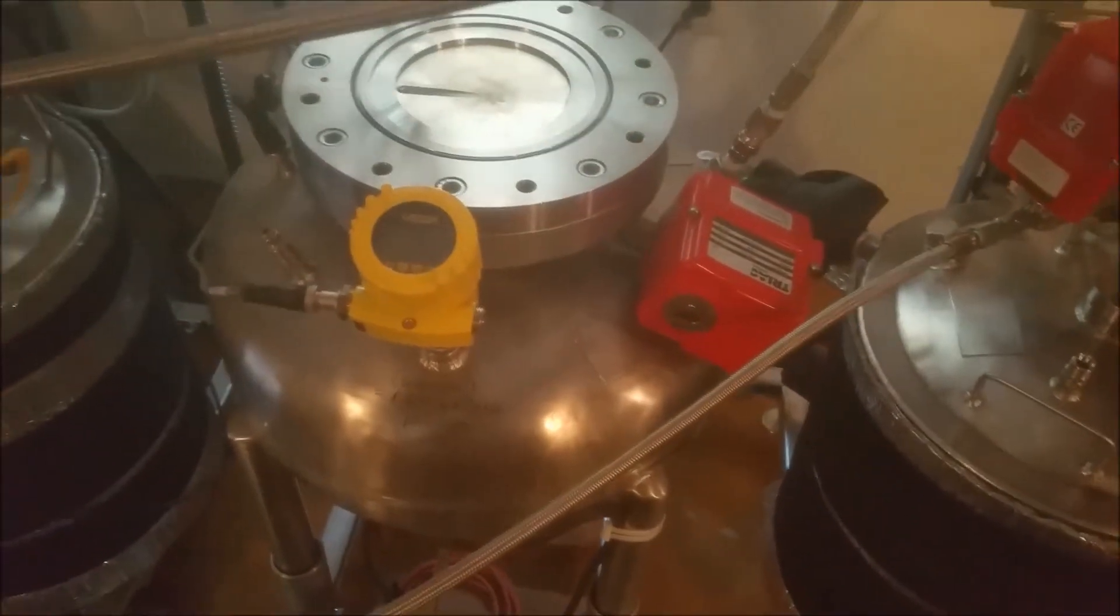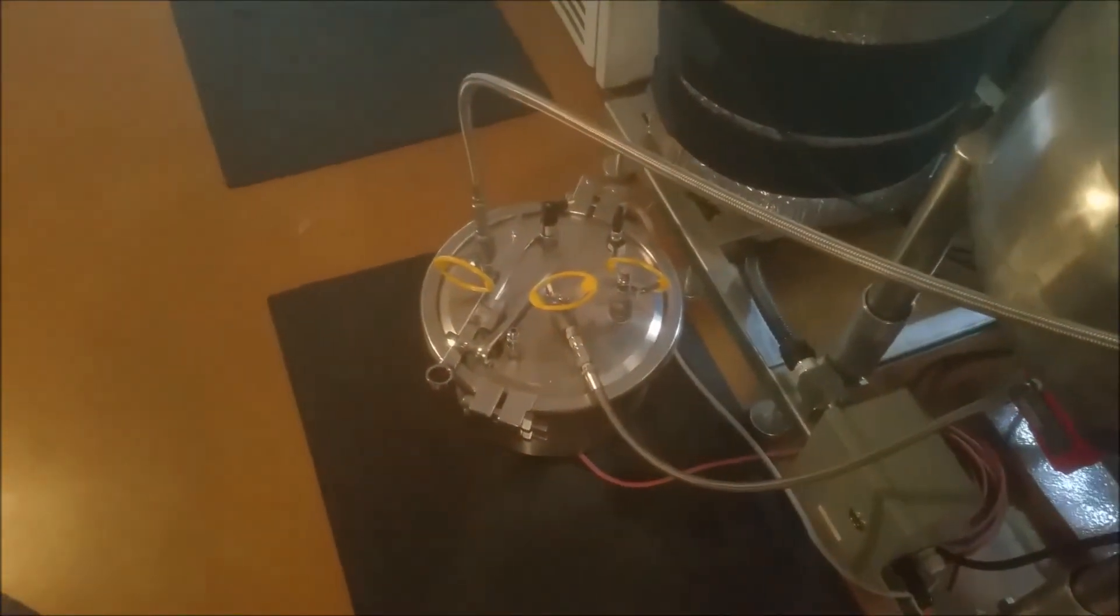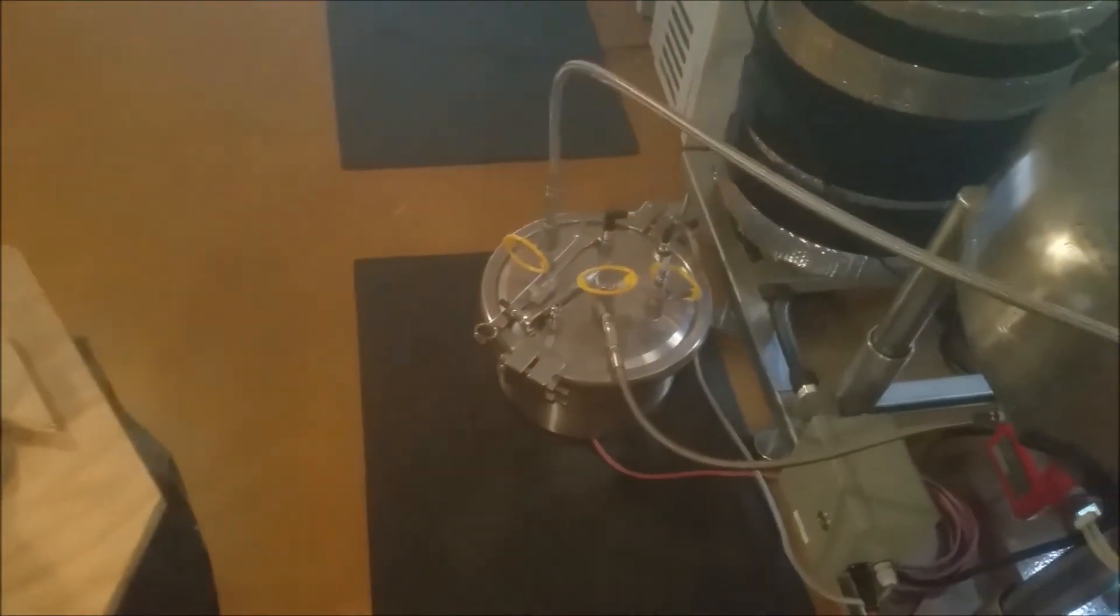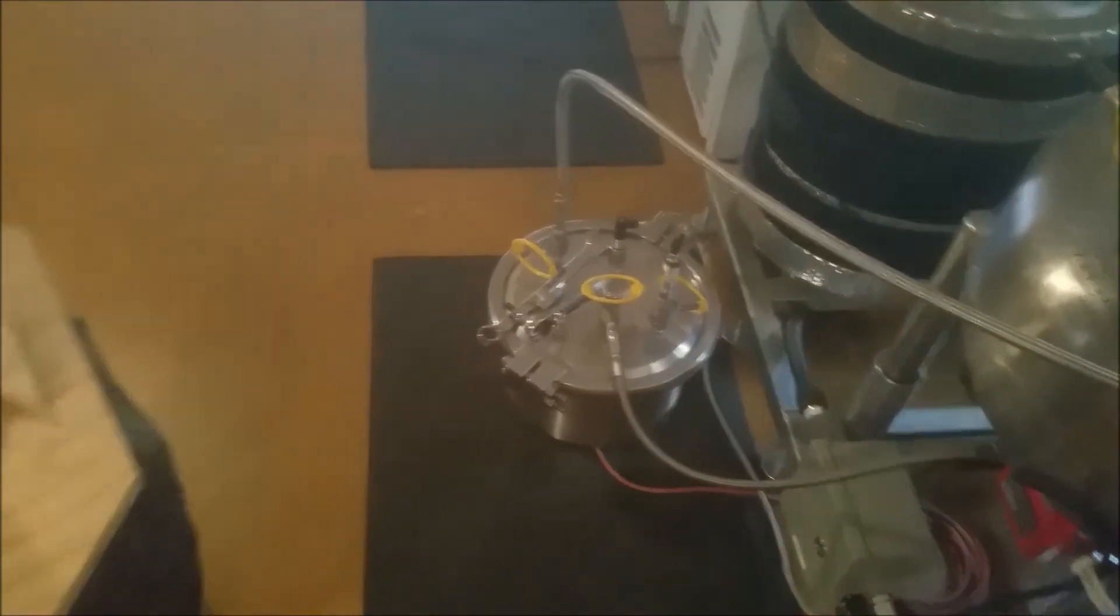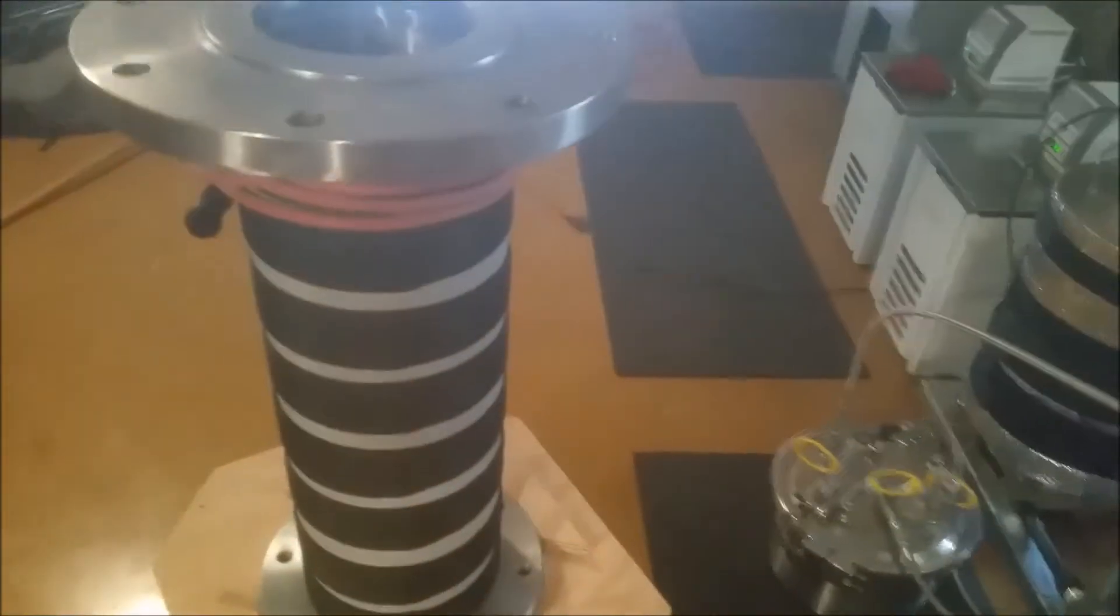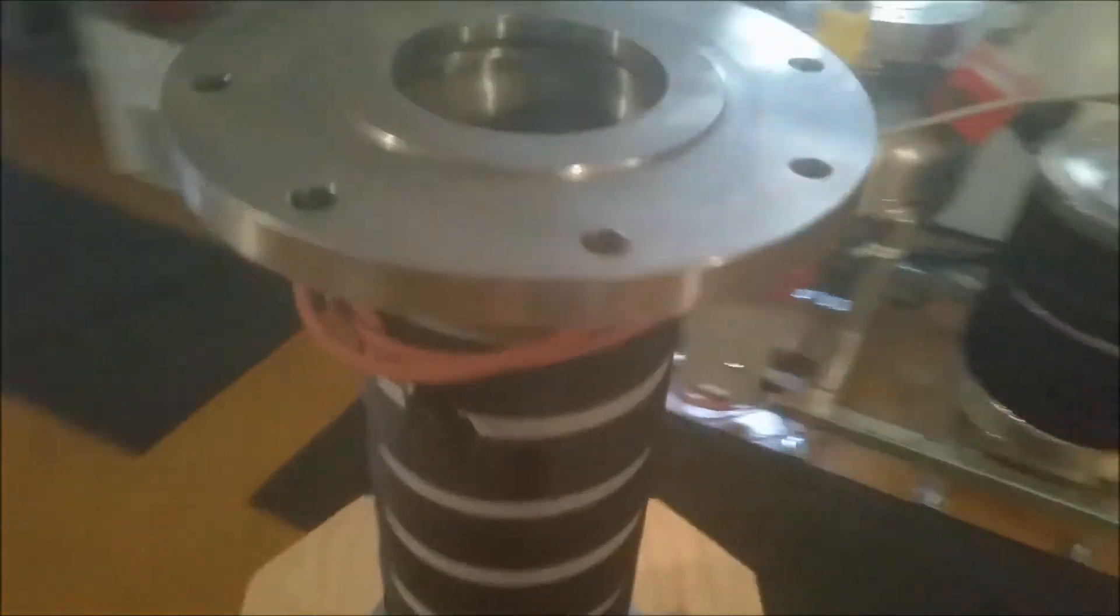There is some solvent pressure left in some of the tanks that are not opened, but when we open the dryer tank to access the extract we have to recover the vapor pressure from that as well as the column that held the plant material.